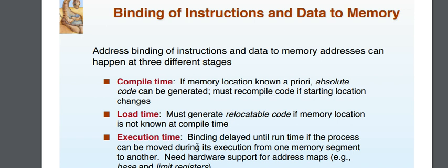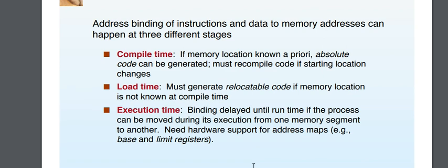For execution time binding, the binding is delayed until run time. This applies when a process can be moved during its execution from one memory segment to another. Hardware support is needed for address mapping — for example, a base and limit address register.